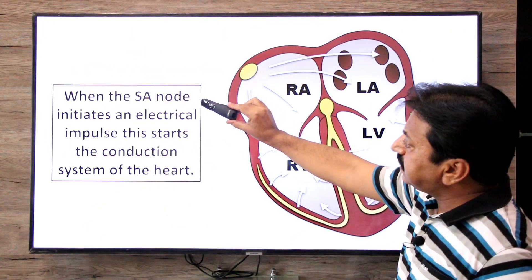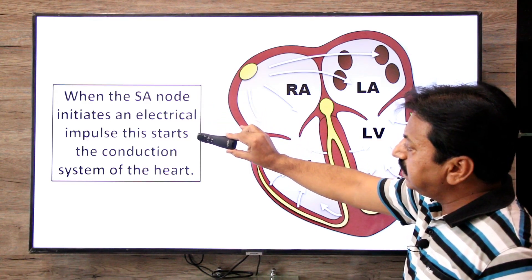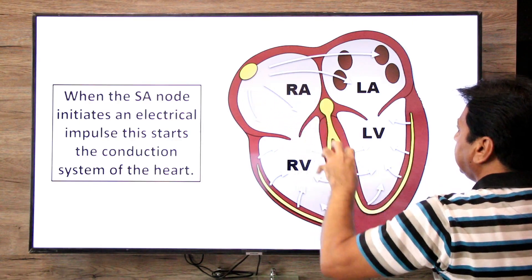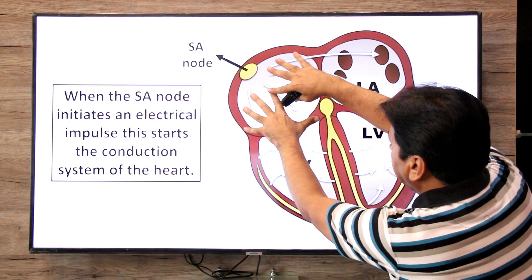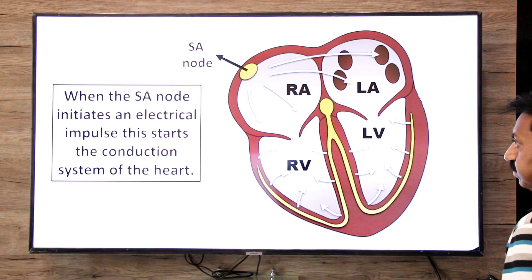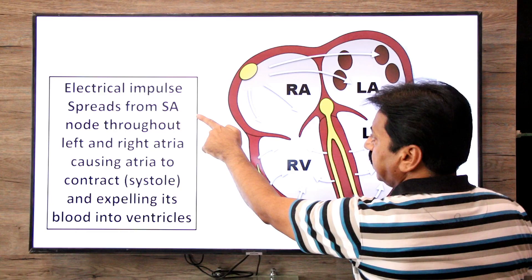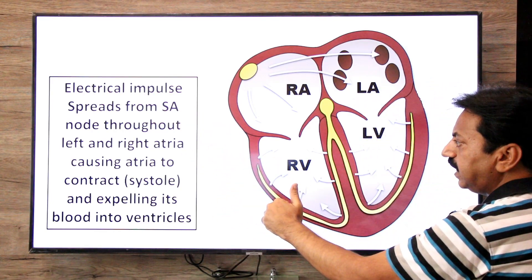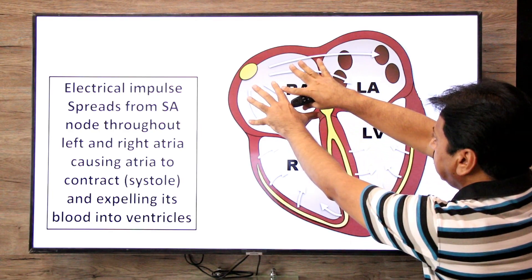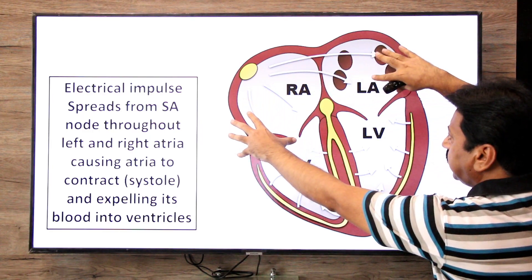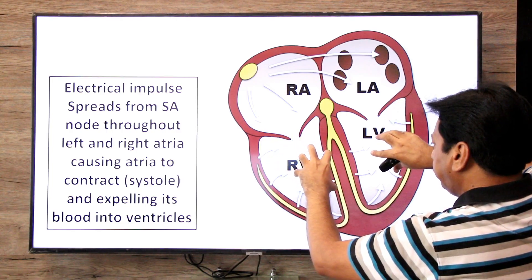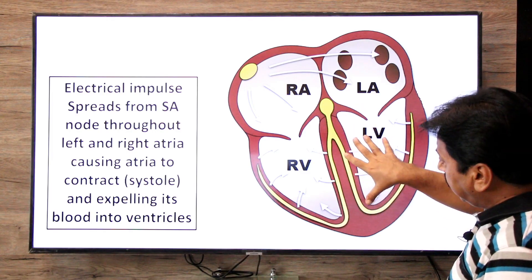When the SA node initiates an electrical impulse, this starts the conduction system of the heart. Electrical impulses spread from the SA node throughout the left and right atria, causing the atria to contract (systole) and expelling blood into the ventricles. As soon as the impulses spread through both atria, they contract simultaneously, the tricuspid valve and bicuspid valve open, and blood fills the ventricles. The next step is to send the signal forward to the ventricles.